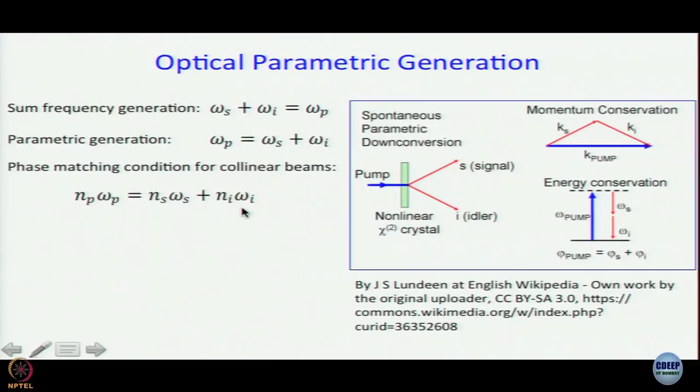Why are there still multiple possible pairs of omega_s and omega_i even with this condition? Because N_s and N_i are not constant - even N_p may not be constant. The refractive indices depend on the specific frequencies involved, so the equation N_p * omega_p = N_s * omega_s + N_i * omega_i does not uniquely determine a single pair.